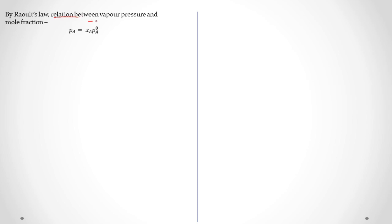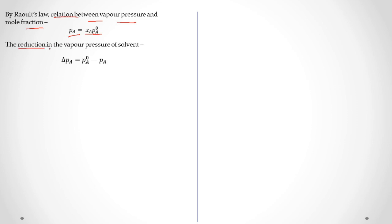By Raoult's law, the relation between vapor pressure and mole fraction: Pa = Xa·Pa⁰. Here Pa is the vapor pressure of the solvent in solution, Xa is the mole fraction of solvent, and Pa⁰ is the vapor pressure of the pure solvent. The reduction in vapor pressure, written as ΔPa, equals Pa⁰ minus Pa. Substituting Pa = Xa·Pa⁰, we get ΔPa = Pa⁰ minus Pa⁰·Xa, which gives Pa⁰(1 − Xa).